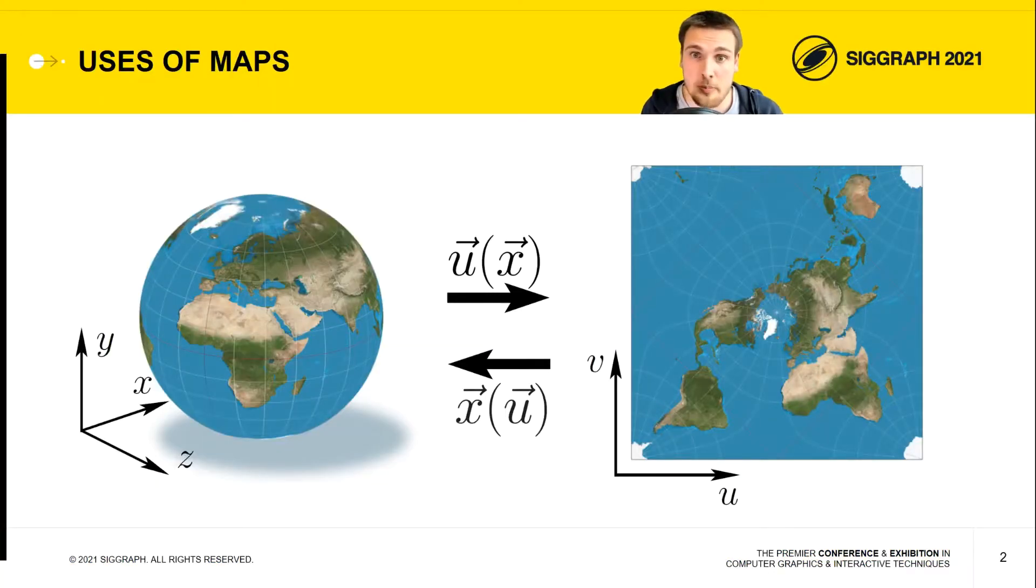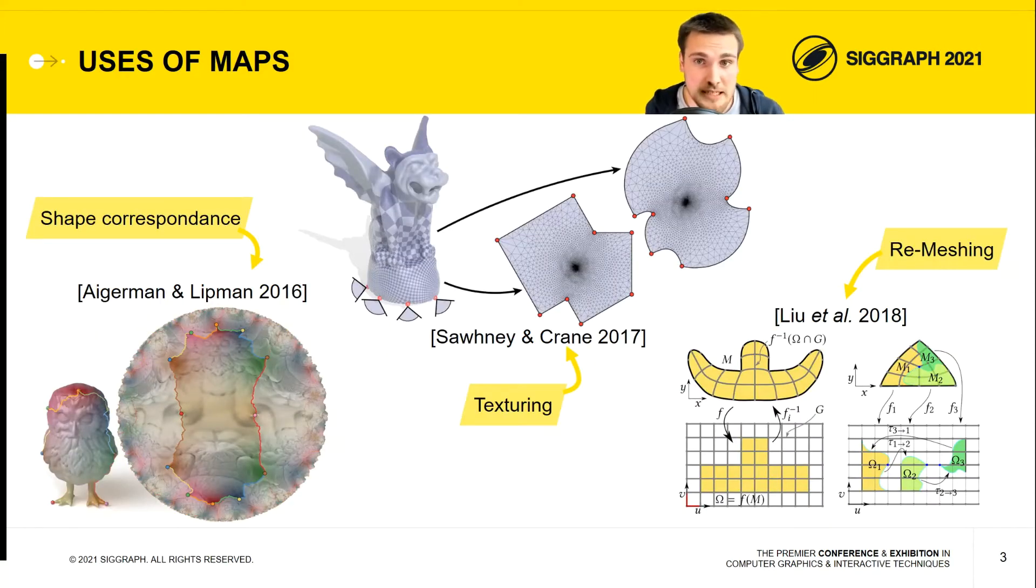The goal of our paper is to compute maps. Maps are a very important tool in computer graphics to do things such as shape correspondence, texturing, or even remeshing.